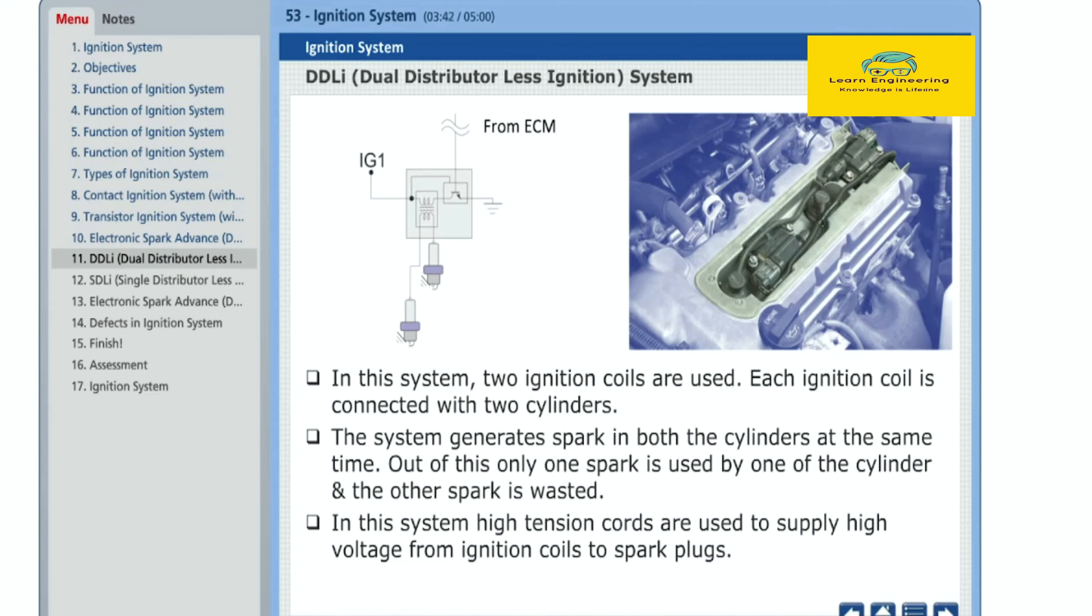The system generates spark in both the cylinders at the same time. Out of this, only one spark is used by one of the cylinders and the other spark is wasted. In this system, high-tension cords are used to supply high voltage from ignition coils to spark plugs.